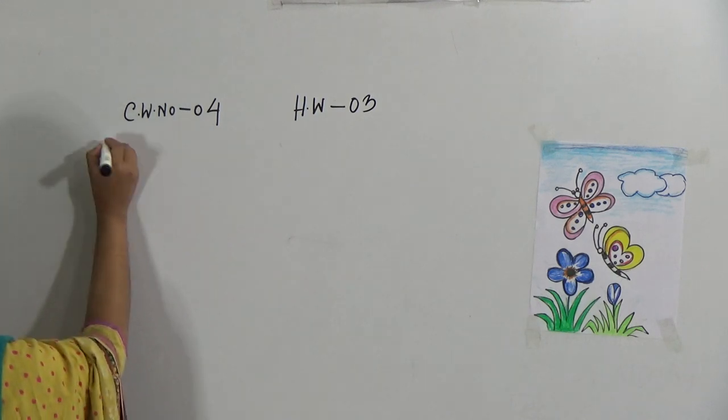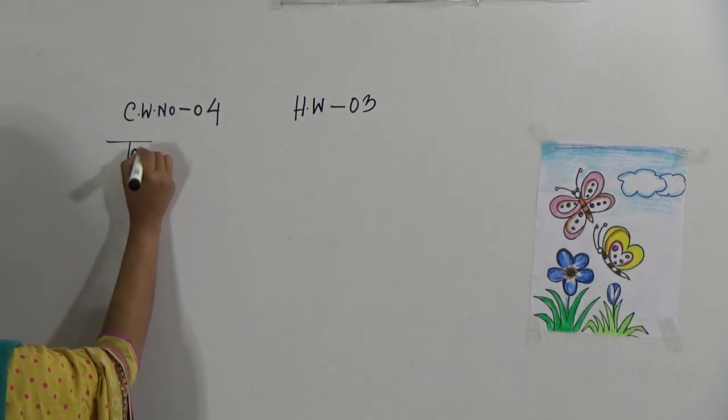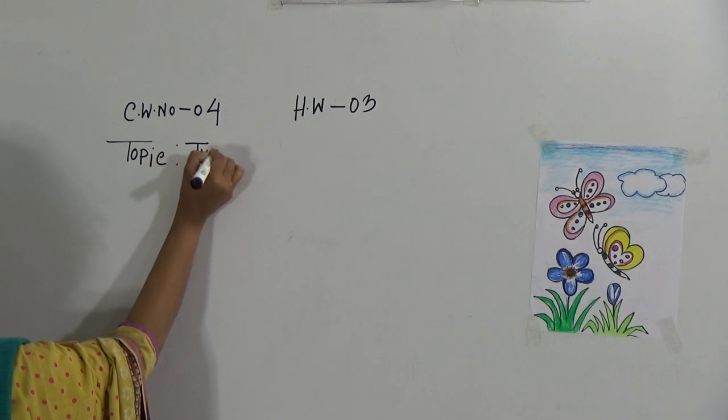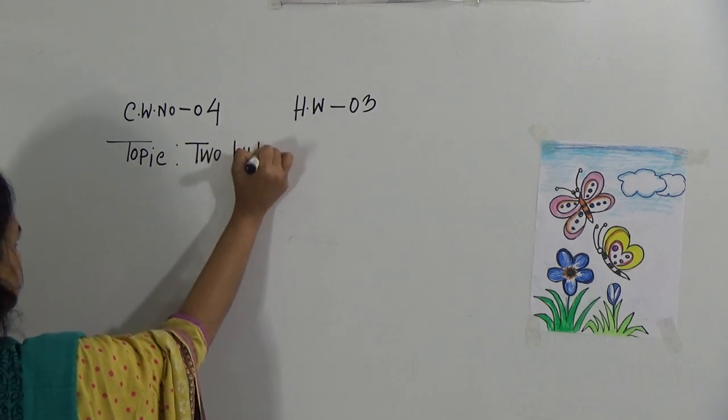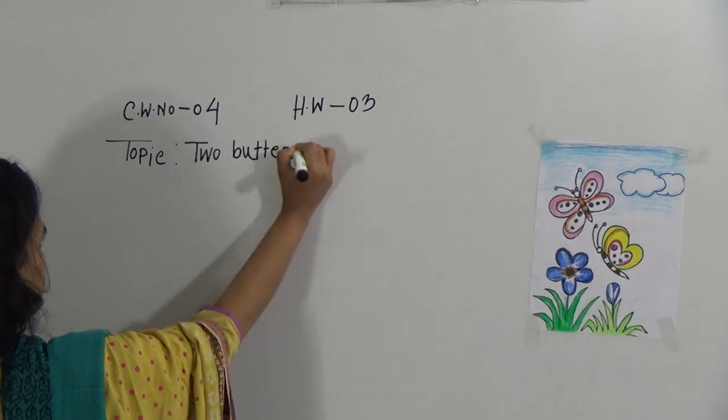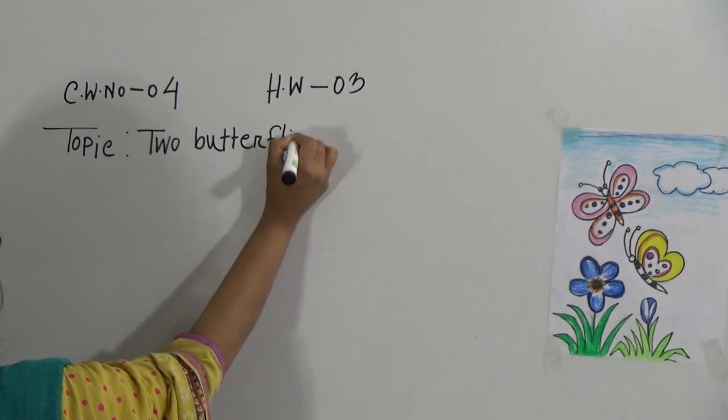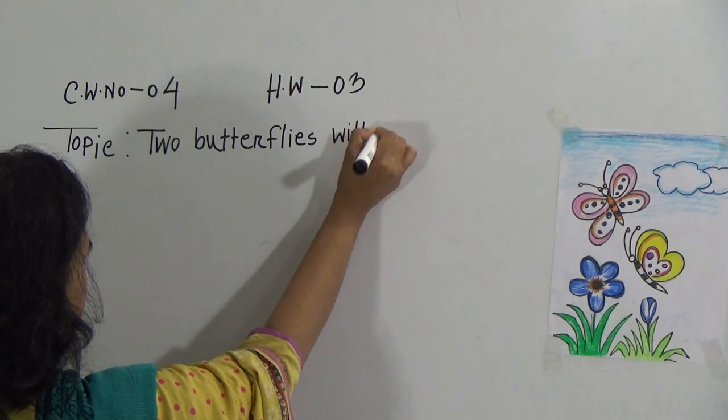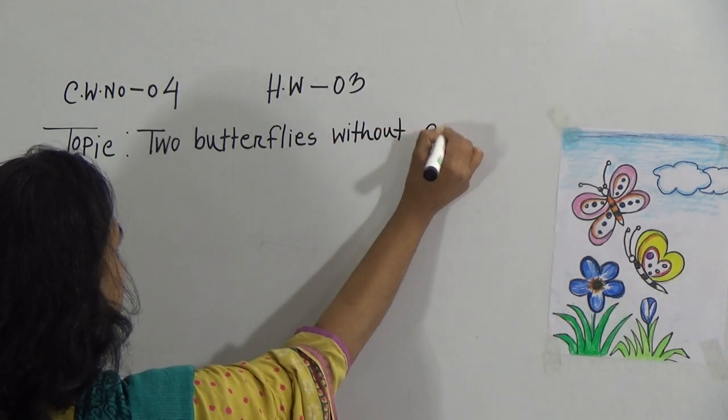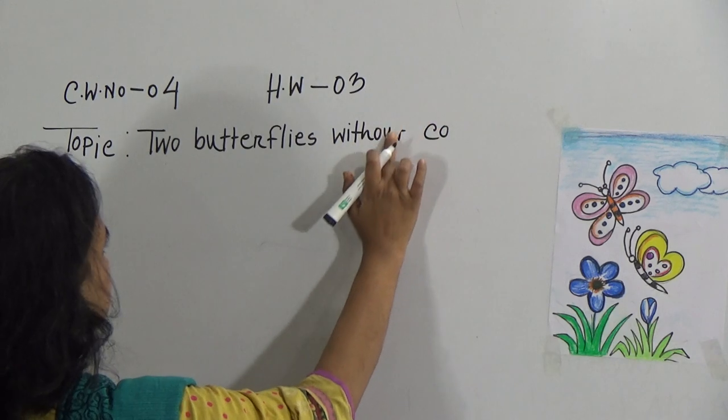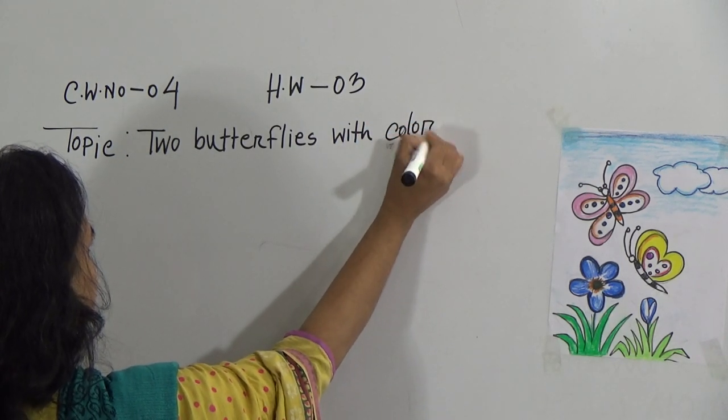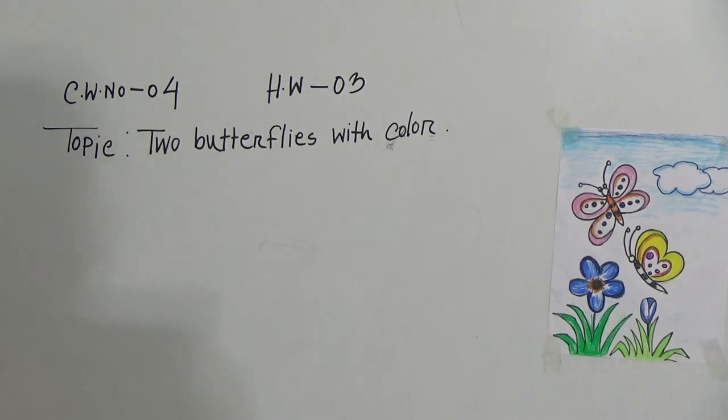And then write down the topic like this. Two Butterflies with Colour. After that you will start your drawing.